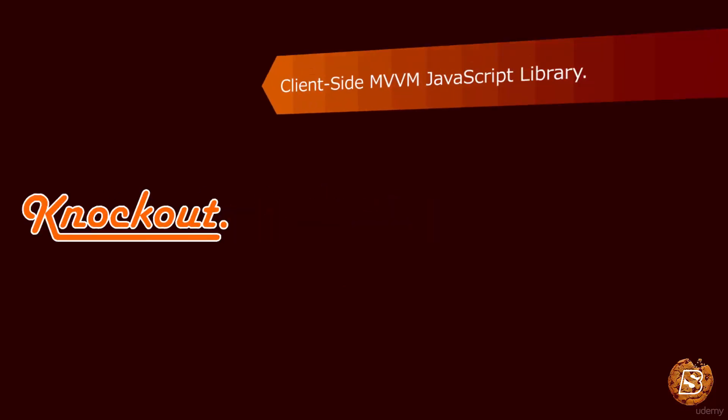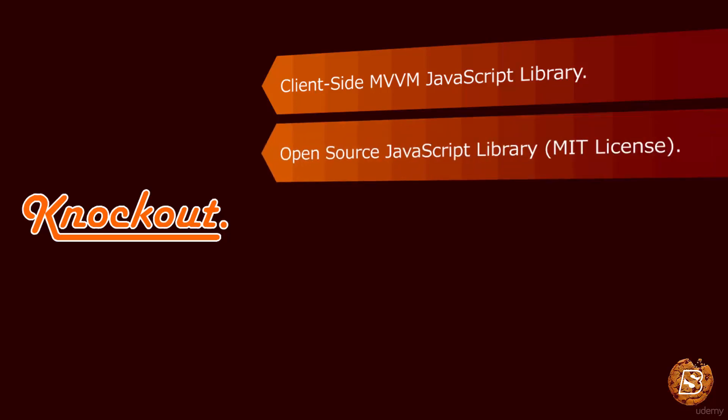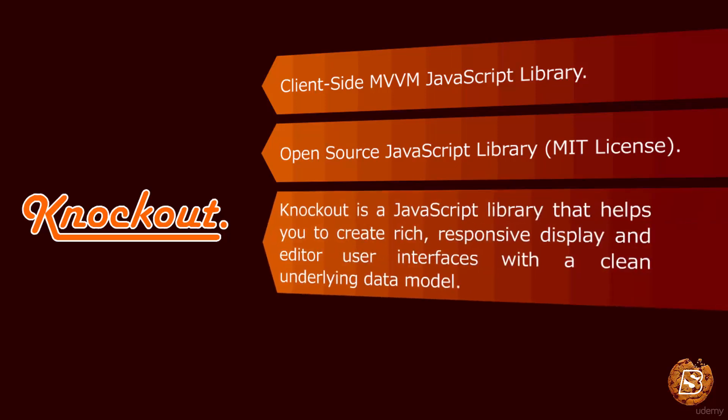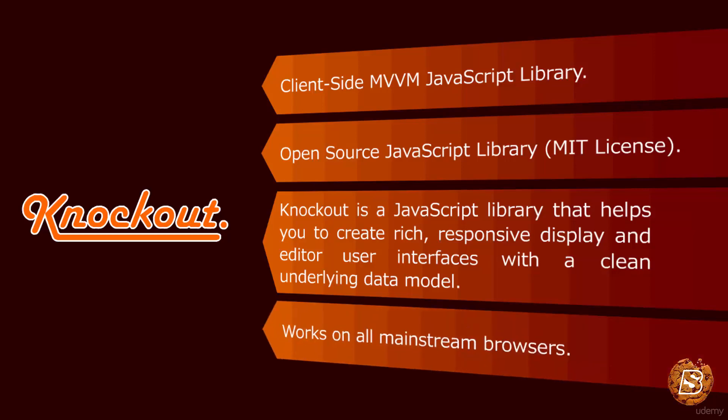Let's start Knockout.js. Knockout.js is a client-side MVVM JavaScript library. It's an open source JavaScript library with an MIT license, and it helps us to create rich, responsive display and editor user interfaces with a clean underlying data model. It works on all mainstream browsers.